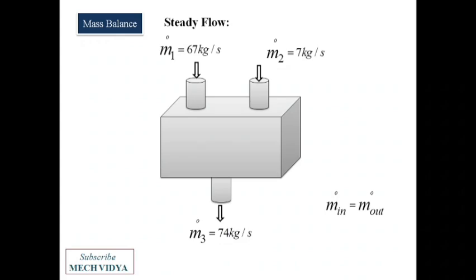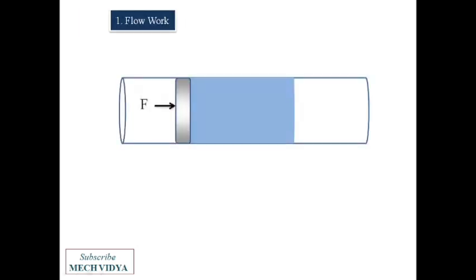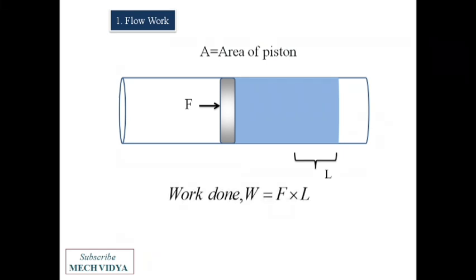One more concept you need to understand before going into the derivation is the flow work. So what is flow work? Suppose what you are seeing on the screen, let it be a pipe and I have some fluid in it. So if I apply a force F Newton and push this volume of fluid in the forward direction, and let it be displaced by a small distance L, and if A is the area of the piston, mathematically what will be the work done? Work done will be force into displacement. So force is nothing but in terms of pressure, I can write pressure into area into L. Then area into length becomes volume. So this is what we have derived: work done can be written as pressure into volume.